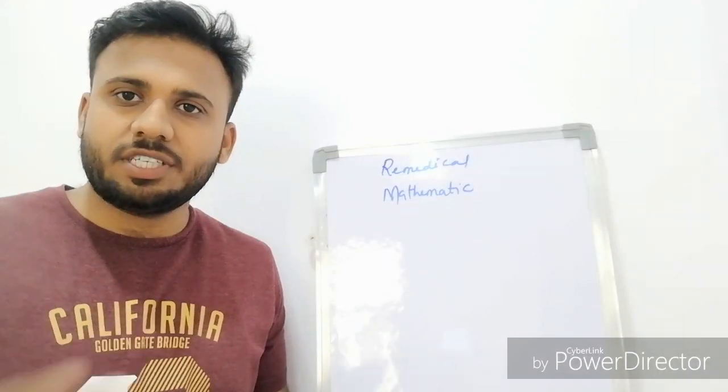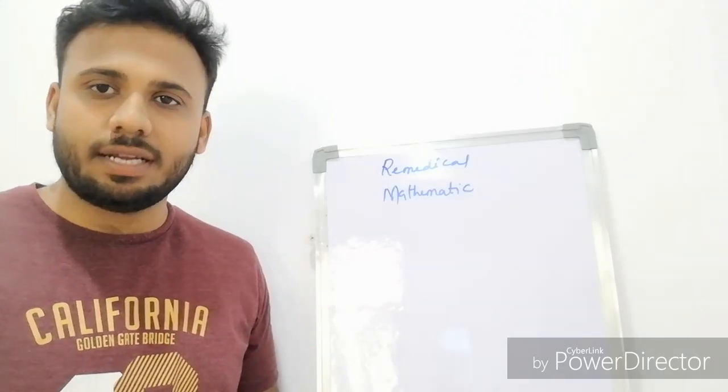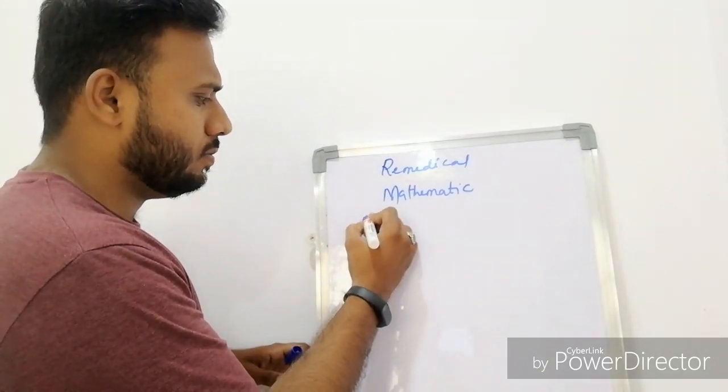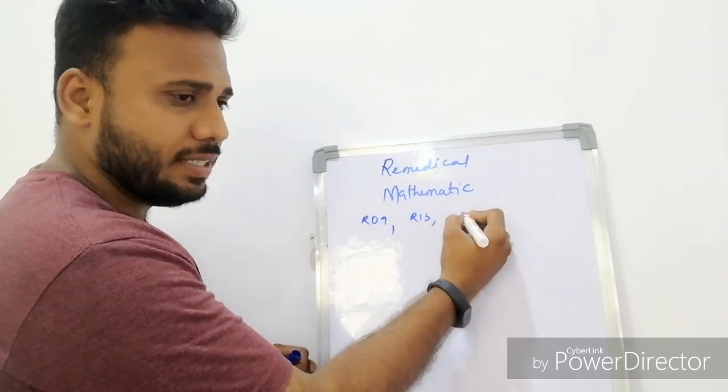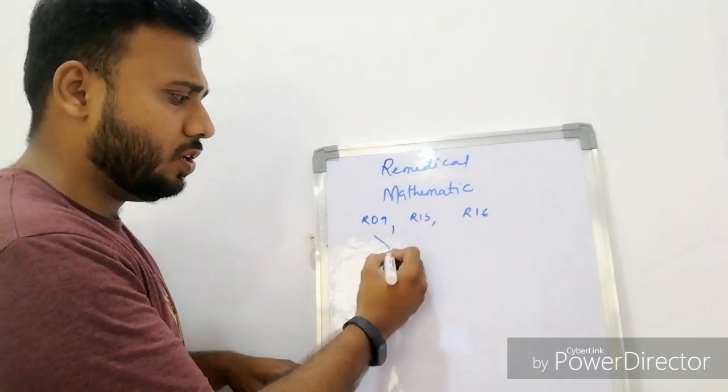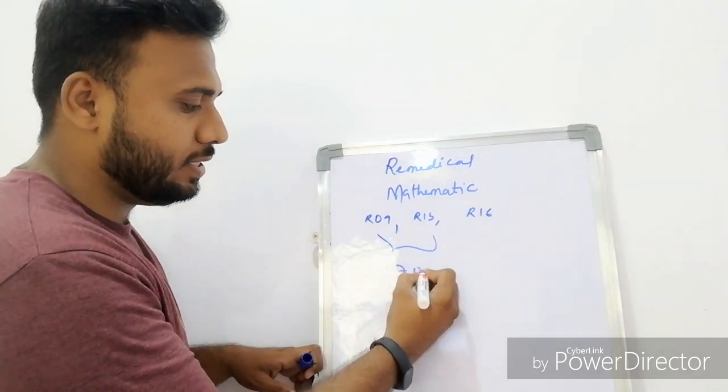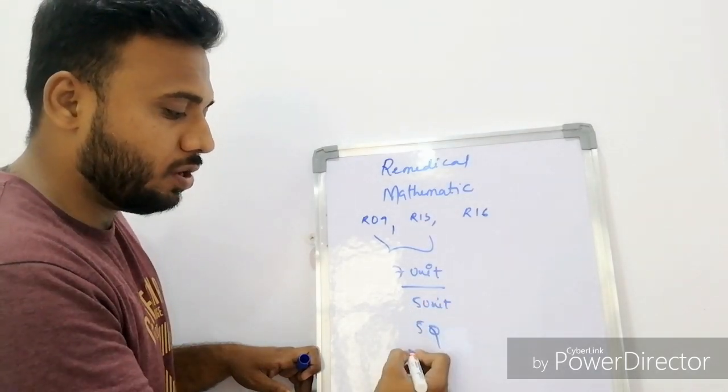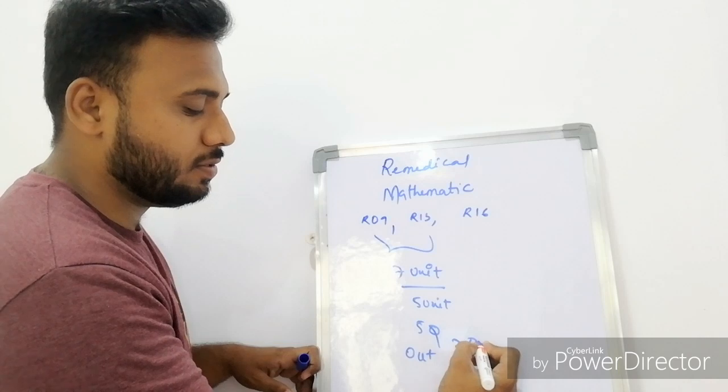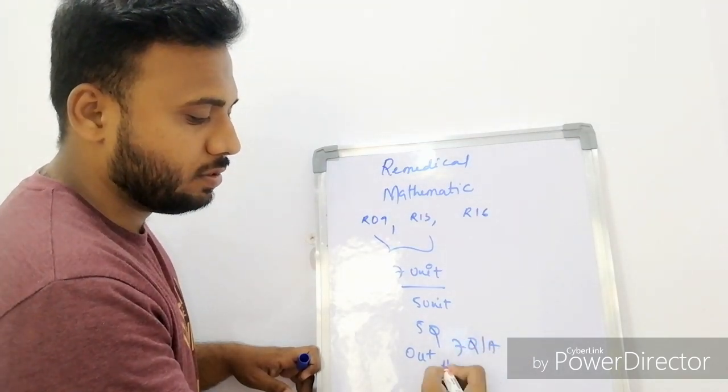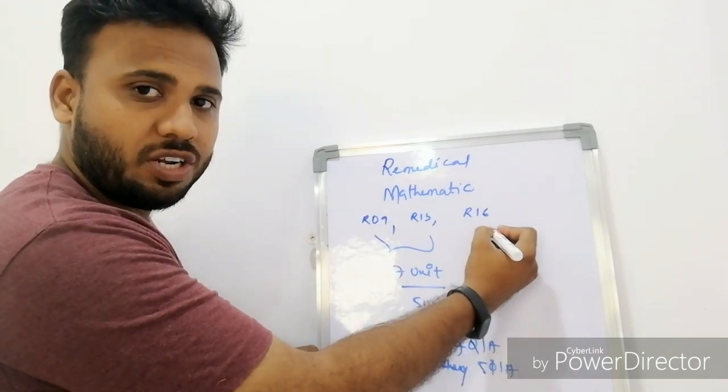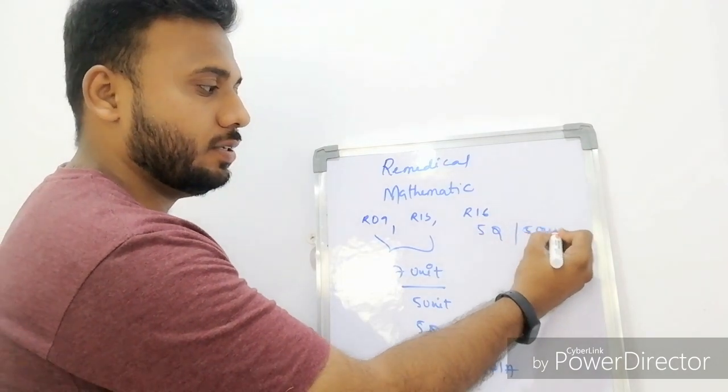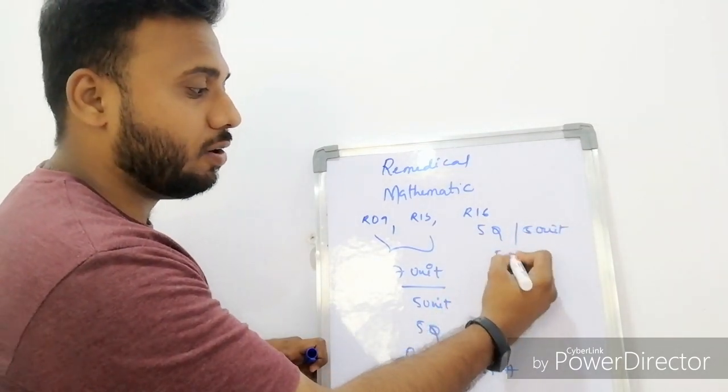Before going through the step by step process, let's see the syllabus of Remedical Mathematics. In Remedical Mathematics there are regulations of R09, R13 and the present syllabus is R16. In R09 and R13, they consist of 7 units. Out of these 7 units, they have to write 5 question answers. In R16 regulation, there are 5 questions and 5 units. There is no choice, we have to attempt all questions.